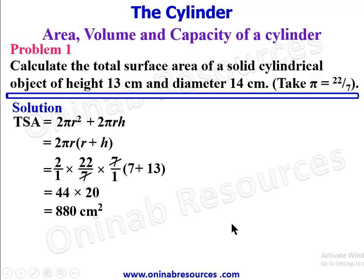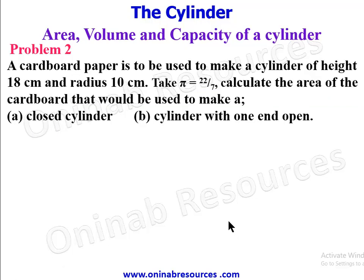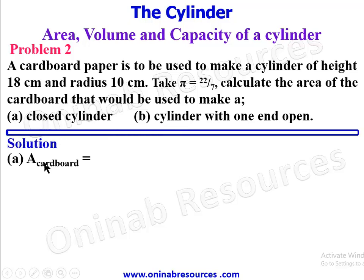Problem 2: A cardboard paper is used to make a cylinder of height 18 centimeters and radius 10 centimeters. Take π = 22/7. Calculate the area of cardboard used to make: a) a closed cylinder and b) a cylinder with one end open. For part a), the total surface area with both ends closed is 2πr(r + h).